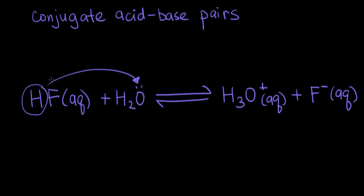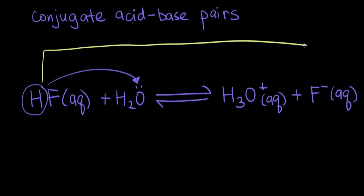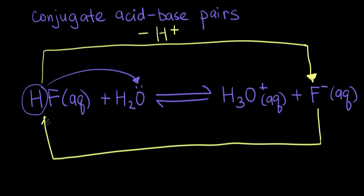If we look at the hydrofluoric acid in the forward direction, our HF is becoming F⁻ by donating or losing a proton — so HF loses a proton to form our F⁻, or fluoride ion. In the backward reaction, the fluoride ion can pick up or accept a proton, gaining an H⁺, and when fluoride accepts a proton, we reform our HF. So HF and F⁻ have this special relationship where you can form one or the other by losing or gaining a proton.